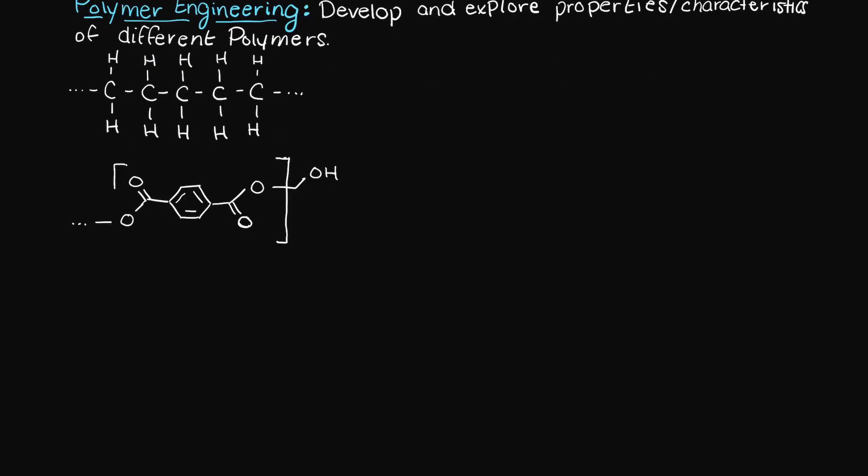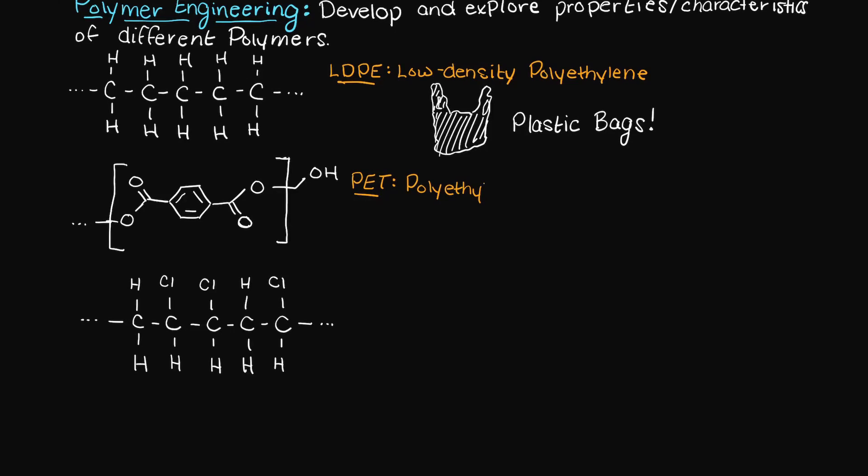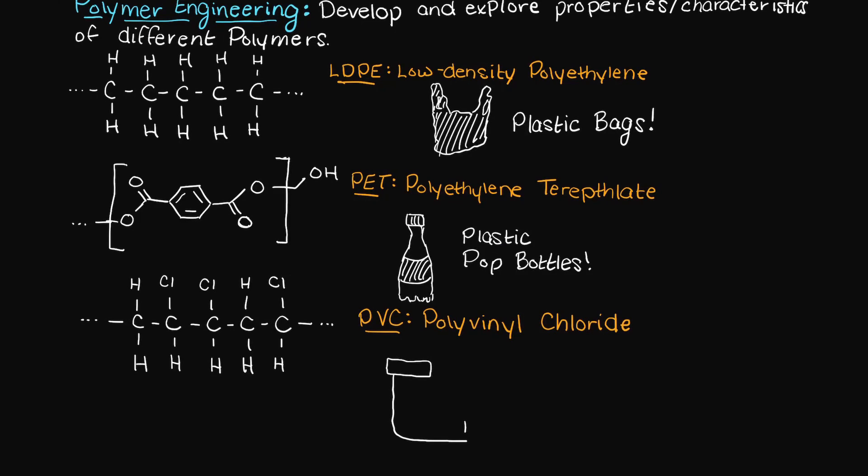I'm just going to write down a couple of examples of many polymers that you may recognize. The first one is commonly used as plastic bags you may see in the superstore, the second is commonly used for plastic pop bottles, and the last one is used for PVC piping.